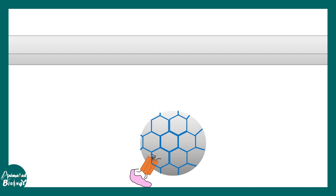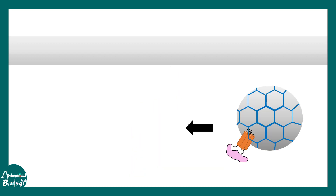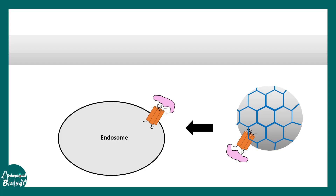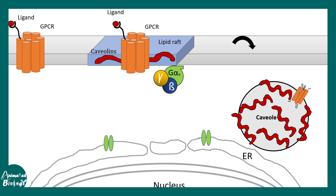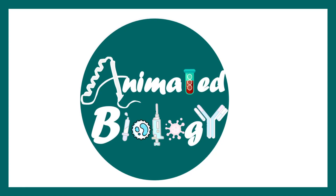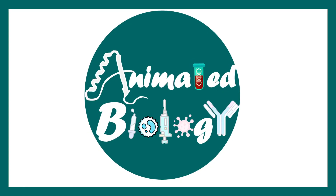Internalized receptors get directed to the endosome, where they are sometimes recycled back to the surface and sometimes degraded. Caveolae-mediated endocytosis can also internalize G protein coupled receptors. Together, these mechanisms give us a broader picture of how G protein coupled receptor signaling is regulated.